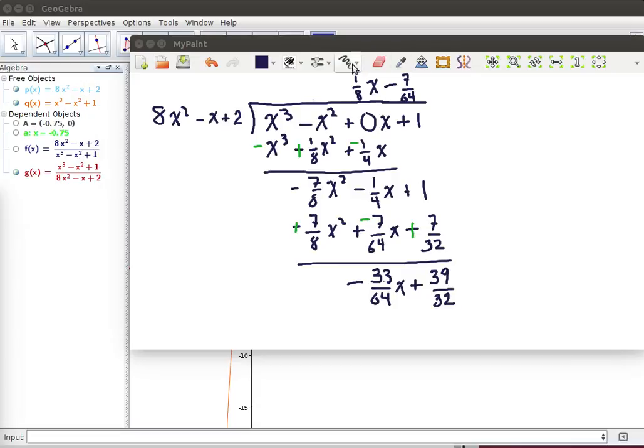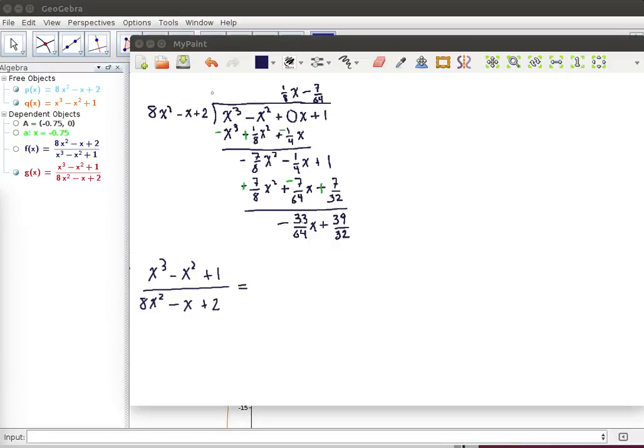Now this quotient up here is going to be the oblique asymptote. Let's see why this division process that we just did tells us that (x³ - x² + 1)/(8x² - x + 2) is equal to 1/8 x - 7/64 plus the remainder divided by the divisor.